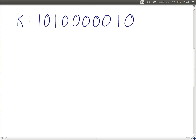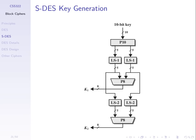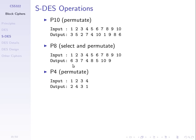So the first thing is to apply P10. P10 is defined as follows: if bits 1 through 10 are coming in, the order in which they come out is defined by the second row of the table. For example, the 3rd bit moves to the 1st position, the 5th bit moves to the 2nd position, the 10th bit moves to the 6th position, and so on. It's a fixed permutation that just rearranges the bits.